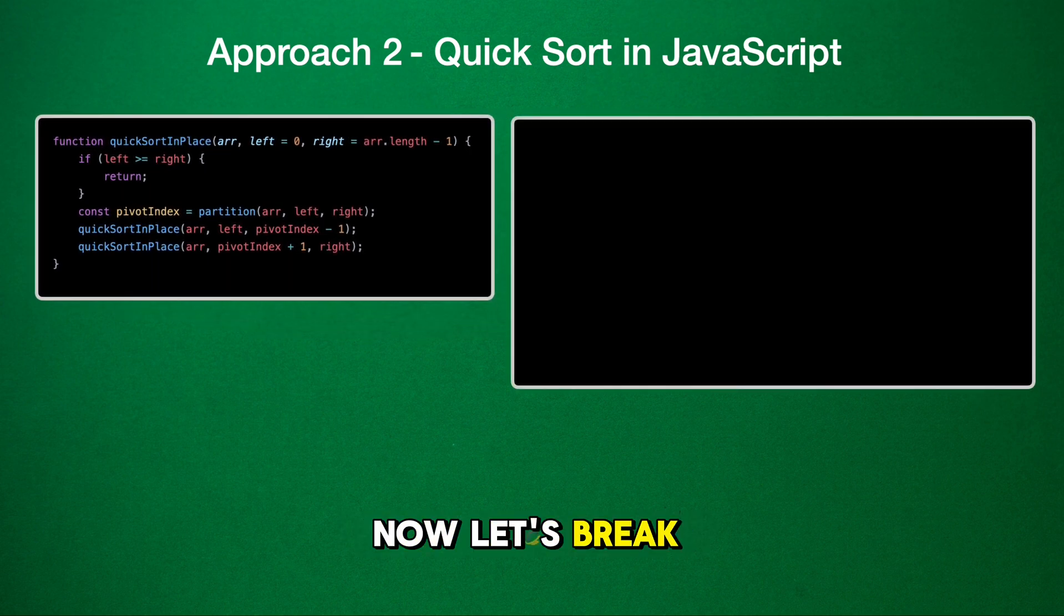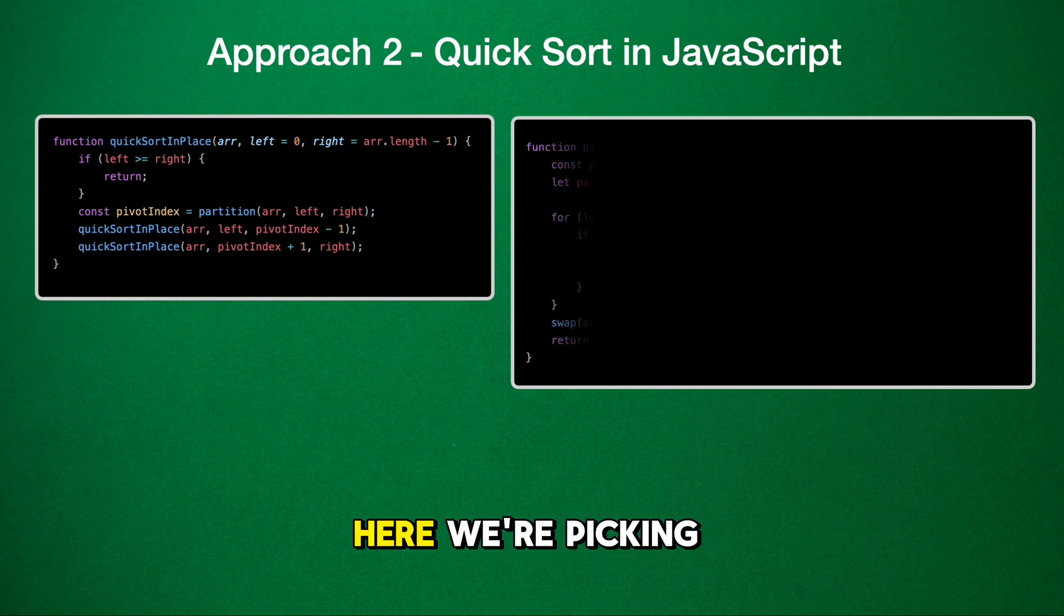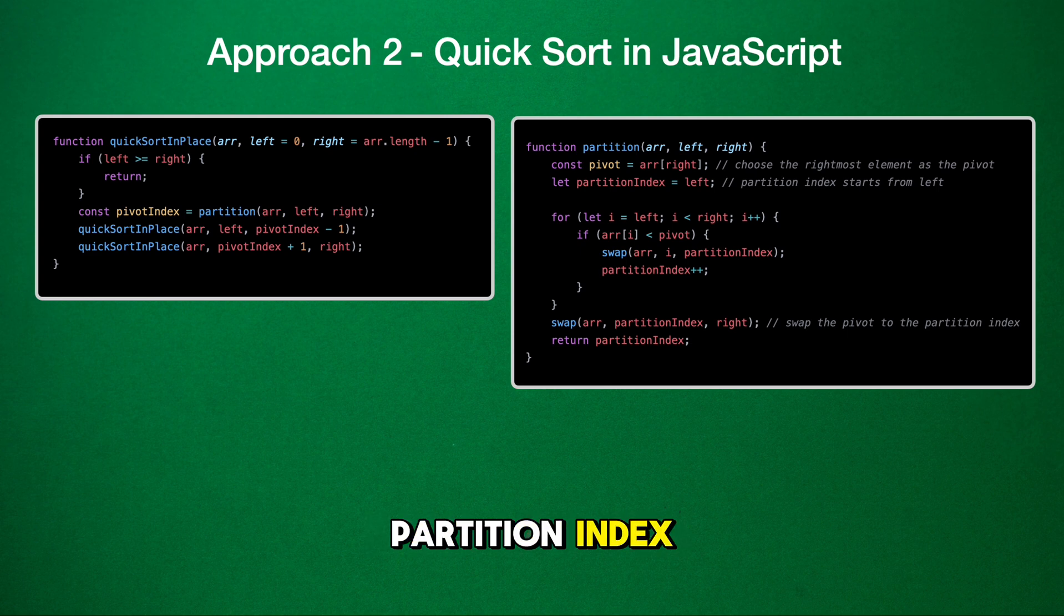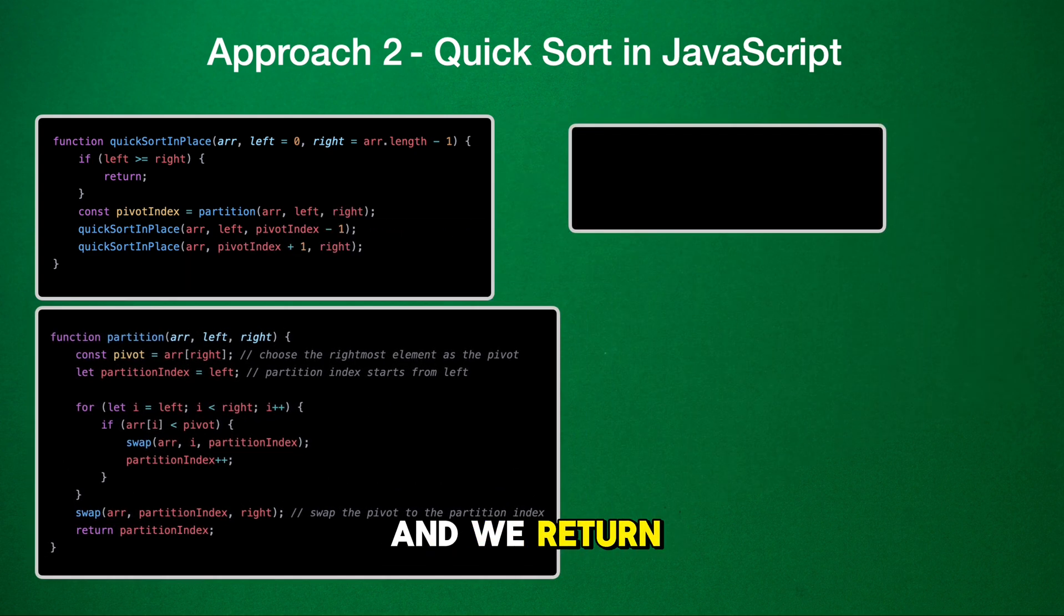Now, let's break down the partition function. Here, we're picking the rightmost element as our pivot. We then loop through the array, and whenever we find an element less than the pivot, we swap it with the element at partition index, which we increment each time we make such a swap. After we've gone through the array, we swap the pivot element with the one at the partition index. Now, our pivot is in the correct spot, and we return its index.